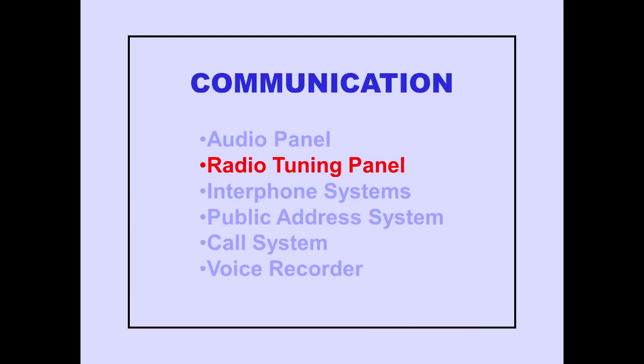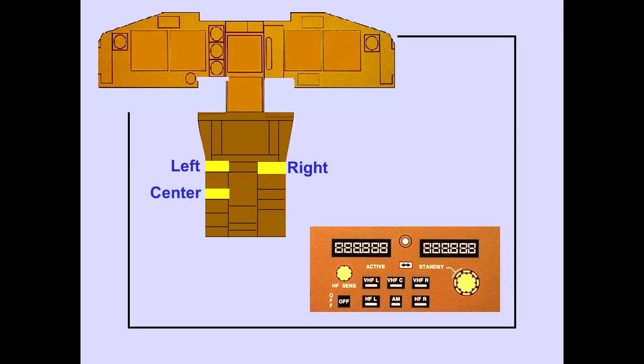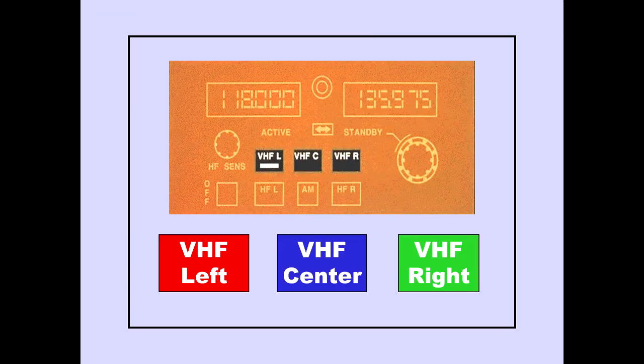Now let's discuss the radio tuning panel. Three radio tuning panels are located on the aisle stand, designated left, center, and right. There are three VHF radios, designated left, center, and right.